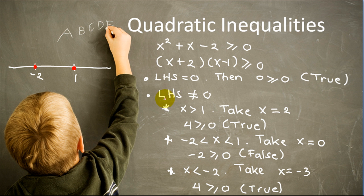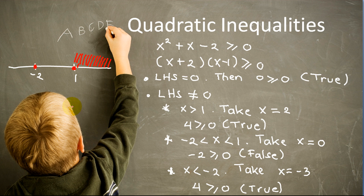Now let us consider the second case when the left hand side is not equal to 0. There are three possibilities: x greater than 1, between negative 2 and 1, and when x is less than negative 2. If x is greater than 1, take any number greater than 1, say 2, and plug it into the left hand side. We get 4, and 4 is greater or equal to 0 is a true statement.